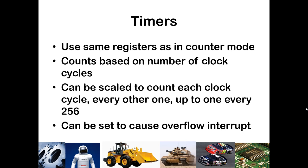Timers allow us to do the same thing as counters but to track time — not necessarily discrete events, which could occur rapidly or slowly, but to track the number of clock cycles that have passed. We can also scale our timers to count each instruction clock cycle, every other one, or up to every 256 clock cycles, which allows us to change how often our timer module will overflow and trigger an interrupt.